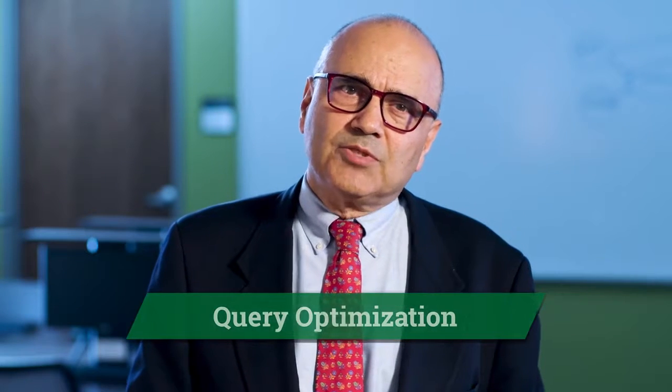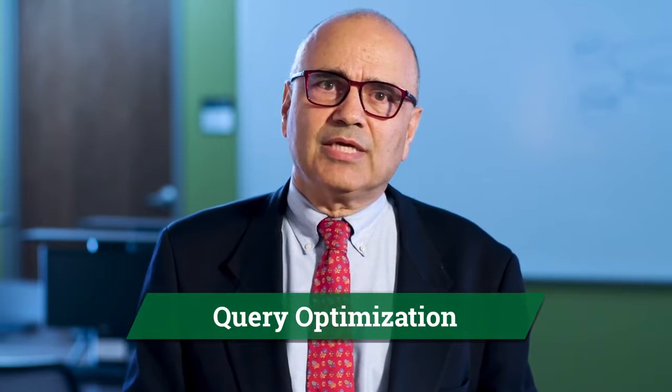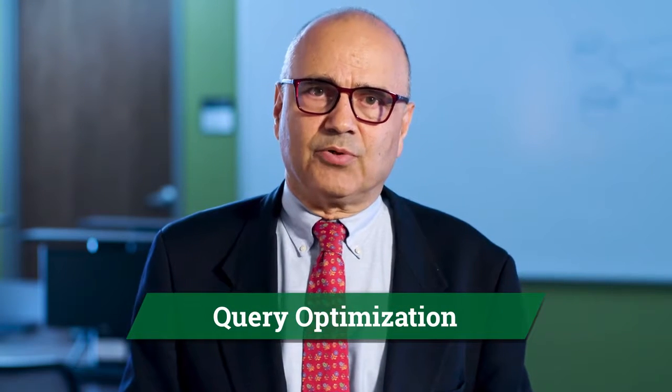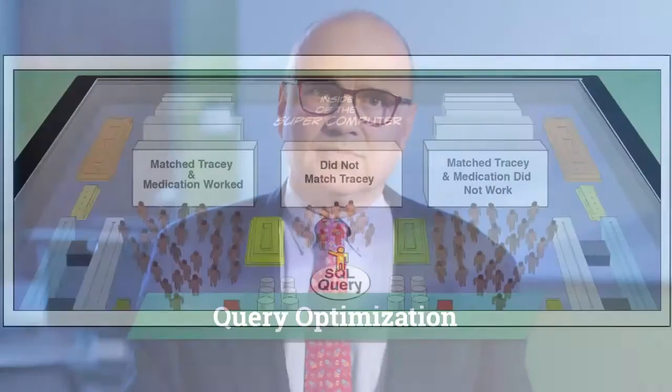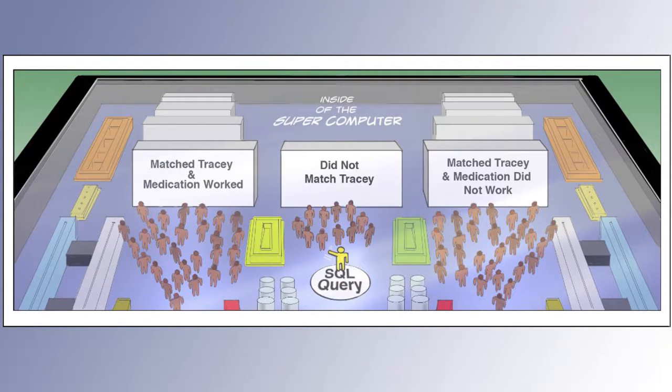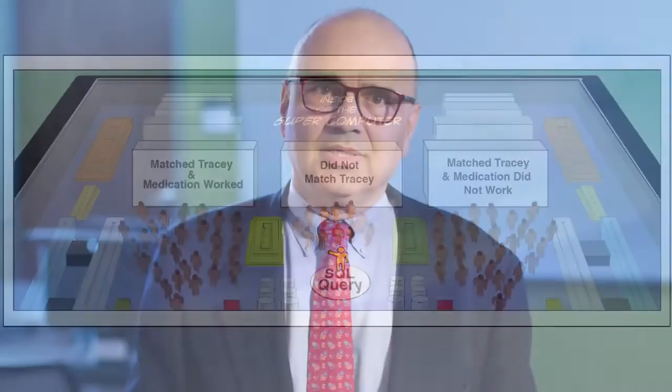Query optimization is done by creating indexing and pointers. These pointers tell the computer what to look for next and where to look. This can really help make the analysis more efficient and reduce the run time. And then you will have time to write even more code.